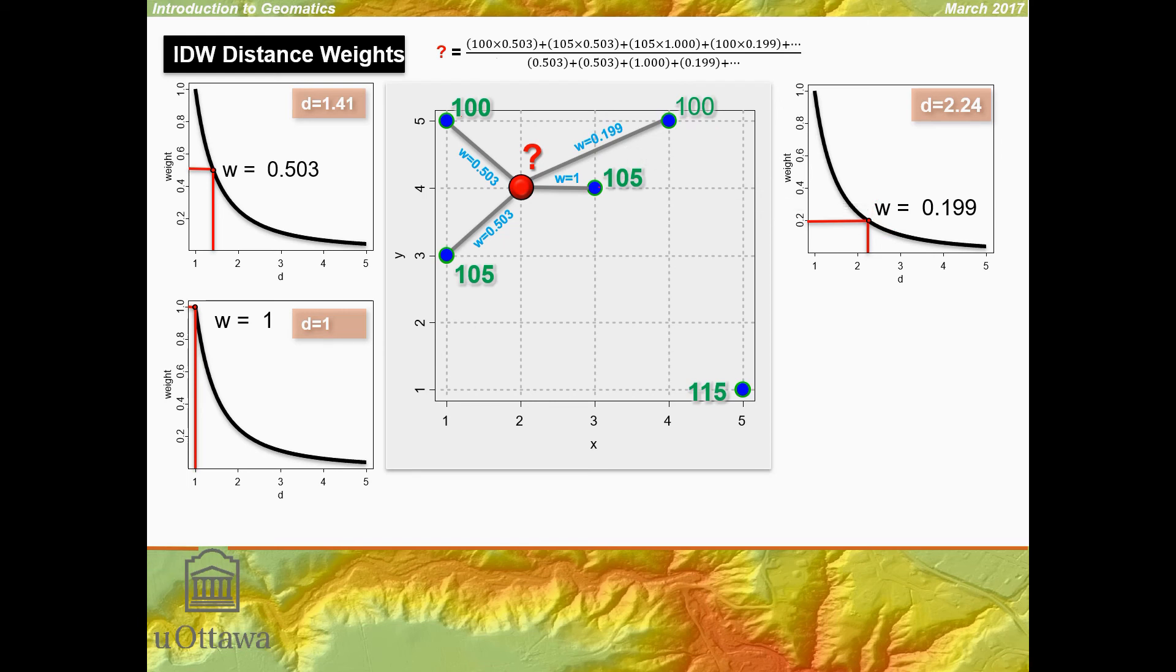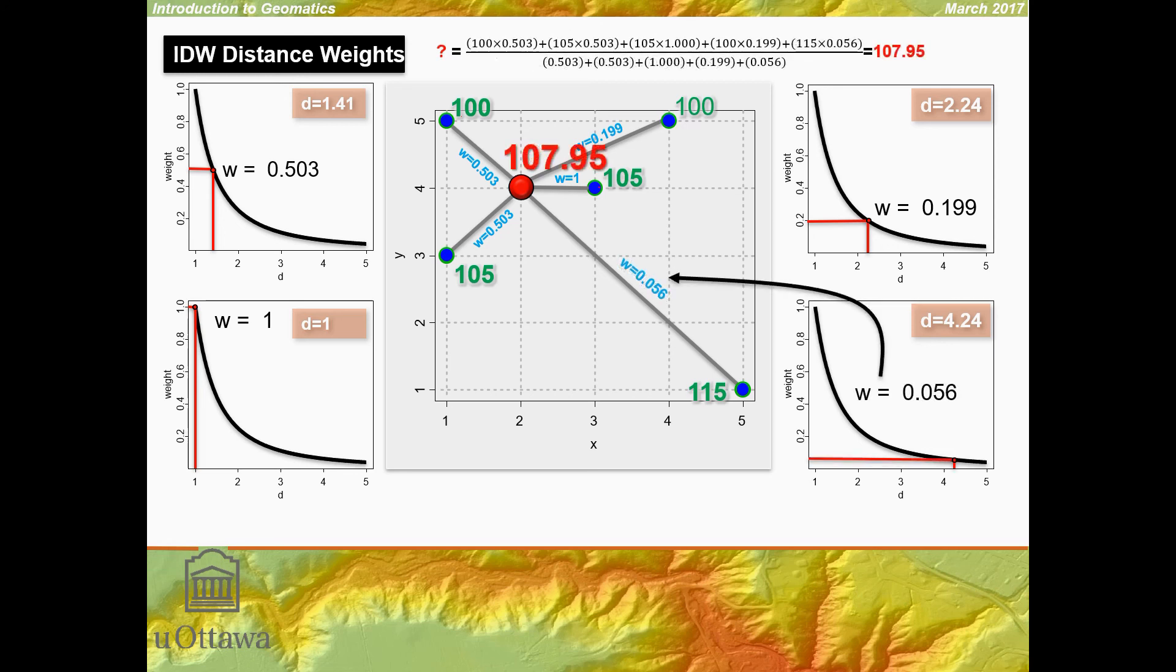Finally, we have one more point still to consider. That's the one that has a value of 115, and it is 4.24 distance units away from our location to be interpolated. We draw our graph and look at 4.24 units on there. We find out what our weight will be, and it's 0.056. So 0.056 times 115 goes up here, and then the weight itself goes there.